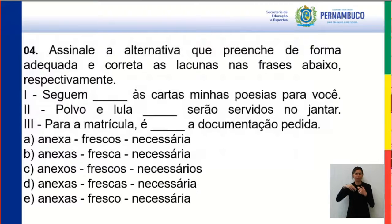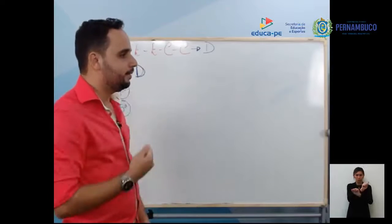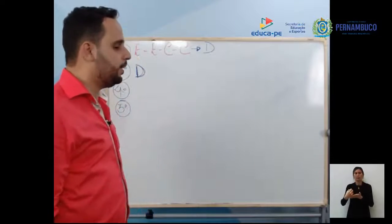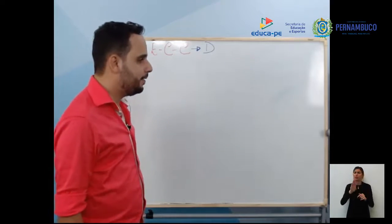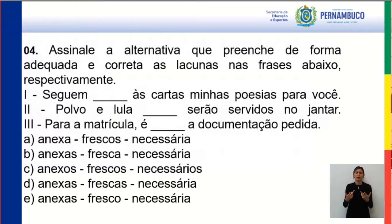Terceiro: para a matrícula é necessária a documentação — 'necessária' concorda com 'a documentação'. Se não tivesse o artigo, seria 'necessário'. Mas ali tem o artigo determinante, então é 'necessária a documentação'. A resposta certa é a letra B: seguem anexas, lula fresca, é necessária a documentação.